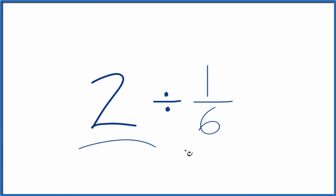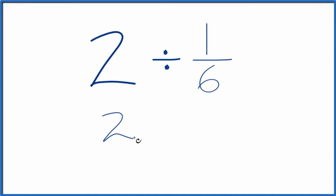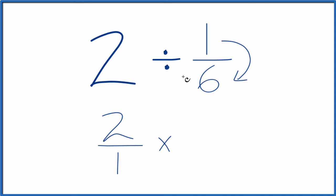If you need to divide 2 by 1/6, here's how you do it. So let's call this 2 over 1 — that gives us the start of a fraction. And instead of division, we're going to multiply by the reciprocal of 1/6. So for the reciprocal, we move the numerator to the bottom and the denominator to the top. So we'll have 2 over 1 times 6 over 1.